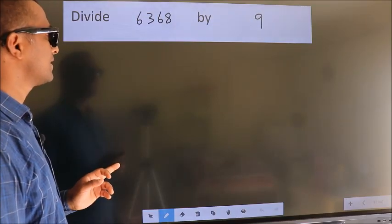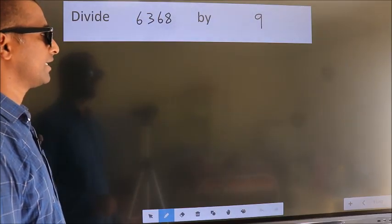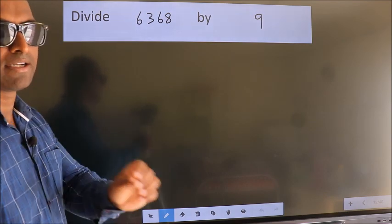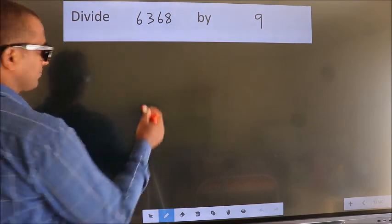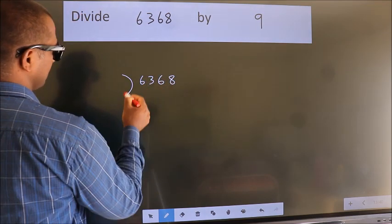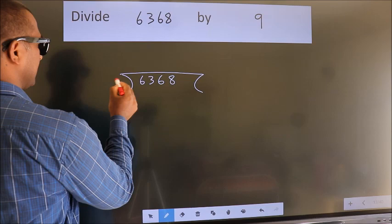Divide 6368 by 9. To do this division, we should frame it in this way. 6368 here, 9 here.